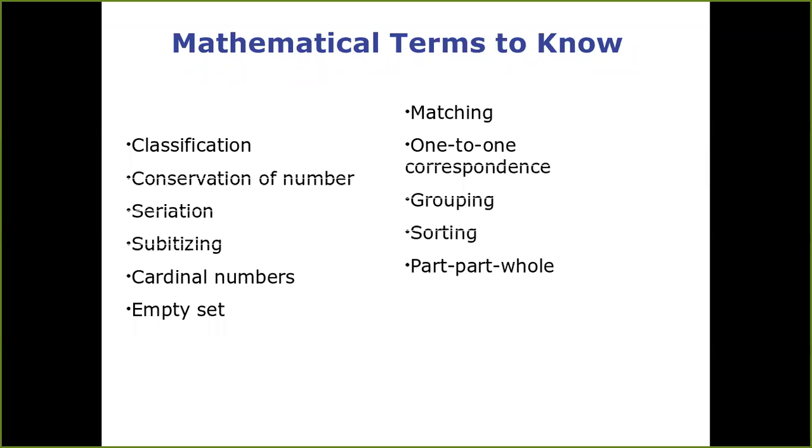Cardinal numbers are numbers that denote the value. So one, two, three are cardinal numbers. Ordinal numbers are those that say order, like first, second, and third. Empty set is the set that has no value, so zero. And understanding that concept of zero is an important part of understanding math.